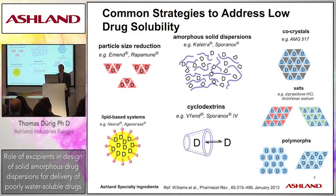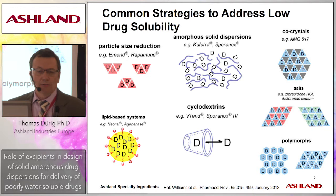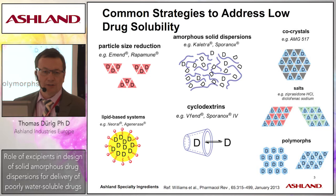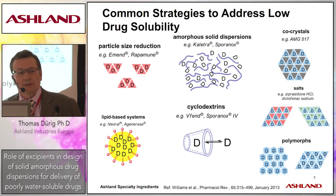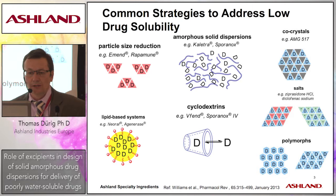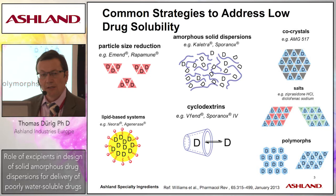Just some general comments about low solubility and amorphous dispersions. Bringing a new molecule to commercialization today has become a lot more challenging, and one of the main issues in terms of oral drug delivery is the large increase in the number of poorly soluble and poorly bioavailable compounds. Approaches include particle size reduction, things like nano-milling — with commercial examples like eMend and Repimune — and amorphous solid dispersions, which are increasingly being used.